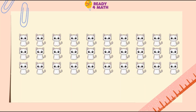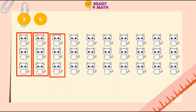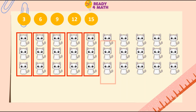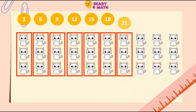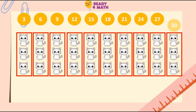Let's try to find out how many cats there are in this picture. To be able to count faster, we need to skip count by 3. Let's begin: 3, 6, 9, 12, 15, 18, 21, 24, 27, 30.